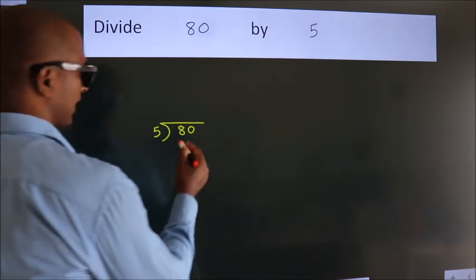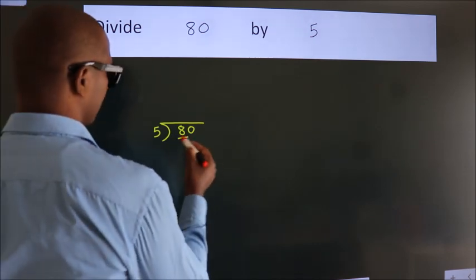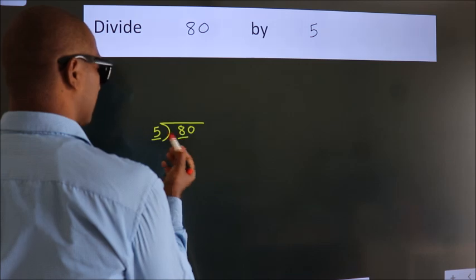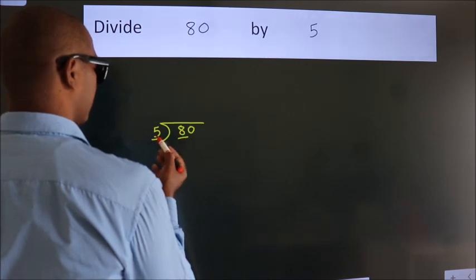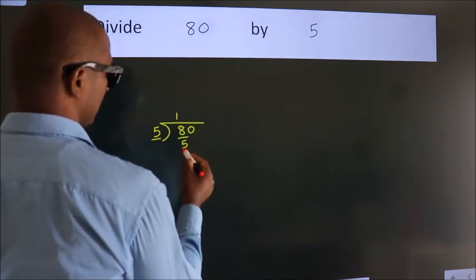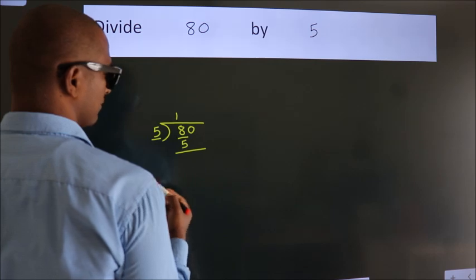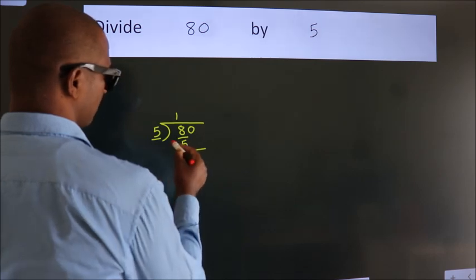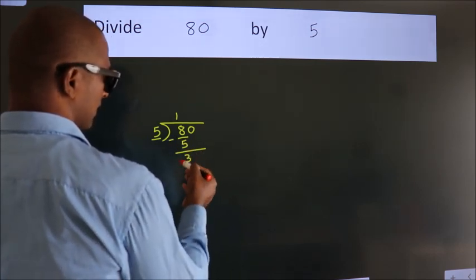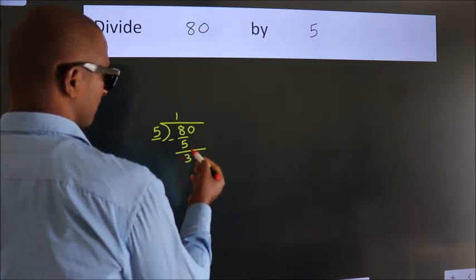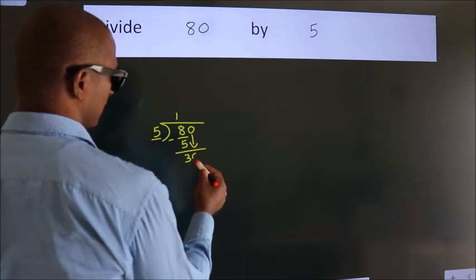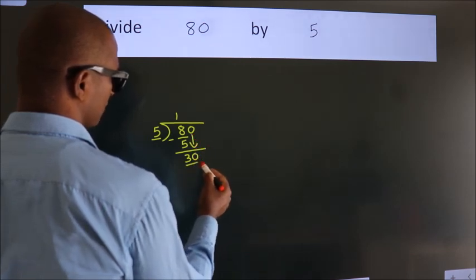Next, here we have 8, here 5. A number close to 8 in the 5 times table is 5 once 5. Now we should subtract. We get 3. After this, bring down the beside number. So, 0 down. So, 30.